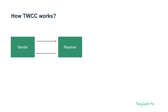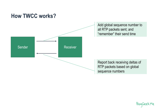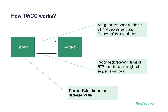Transport Wide CC works in a different way. Here, the sender is the one that needs to make that estimation. The sender will be sending a global sequence number on all RTP packets being sent, and will remember the send times based on that sequence number. The receiver will then report back all of the deltas — the differences between the RTP packets that were received — based on that global sequence number. Now the sender has all the information it needs, and will use that to decide if and when to increase or decrease bitrate based on the estimation it calculates on its own.